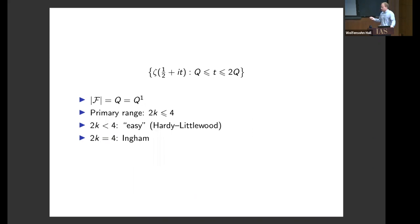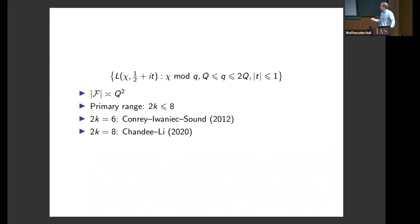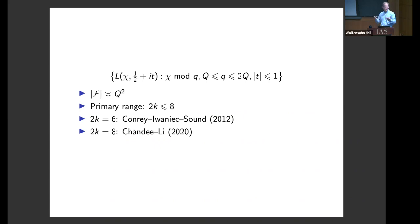If one wants to estimate larger moments, one could try enlarging the family somewhat — instead of working with a single modulus, you can vary the modulus in a dyadic range and allow T to vary in a short window. The family size is roughly Q squared, making the primary range go up to eight. There have been rigorous results on these moment asymptotics by Conrey and others, and then Soundararajan-Young treating the sixth and eighth moments, though with only a logarithmic savings rather than a power savings.